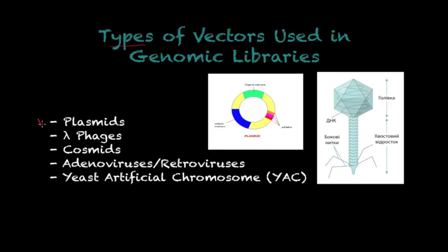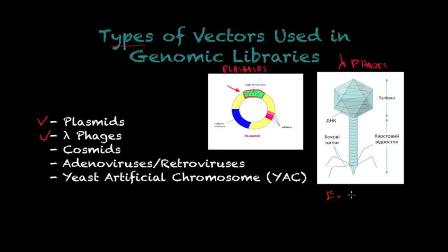The first type on the list are plasmids — circular DNA molecules, as illustrated in the picture. They're easy to manipulate in the lab: you can cut a piece out of the plasmid and insert the fragment you wish to clone. The second type, very commonly used, are lambda phages. These are viruses that infect bacteria, and lambda phages specifically use E. coli as their host.